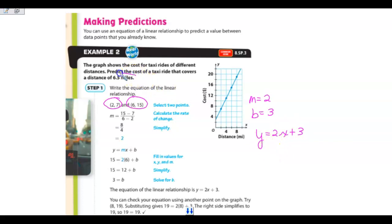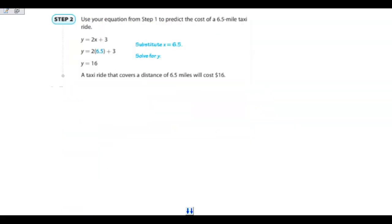Now, they want to know what the prediction would be for 6 and a half miles. And x is the number of miles. This is our x. So all I have to do is put in 6.5 in my equation. And that's going to tell me what y is. So 6.5 times 2 is 13. 13 plus 3 is 16. So y is telling me it's going to cost $16.